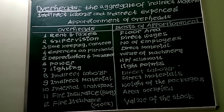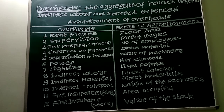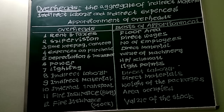On the basis of elements, overheads are classified into indirect material, indirect labour, and indirect expenses. Indirect materials are those costs which can be apportioned and absorbed by cost centres or cost units — for example, lubricating oil, cotton waste, consumable stores, tools, etc. Indirect labour cost is the cost of wages which cannot be allocated but can be apportioned to cost centres or cost units. Indirect expenses refers to expenses which cannot be allocated but can be apportioned to or absorbed by cost centres or cost units.